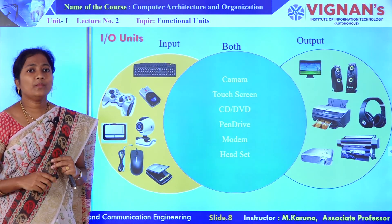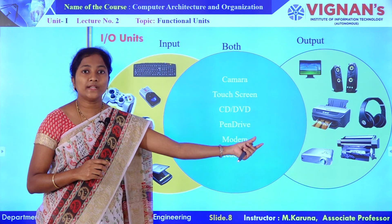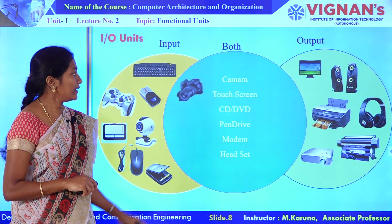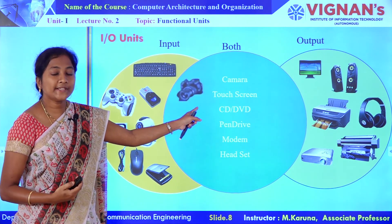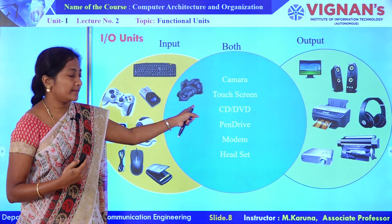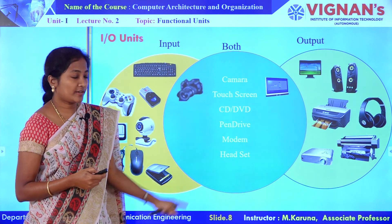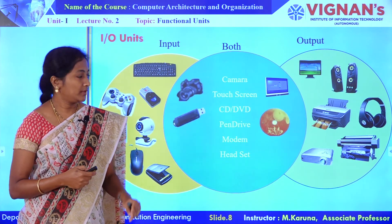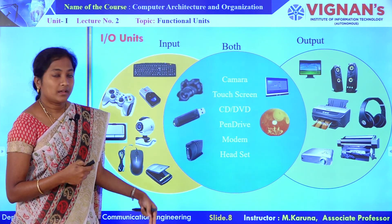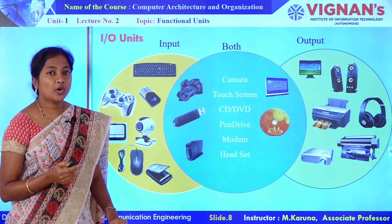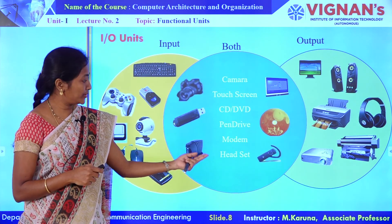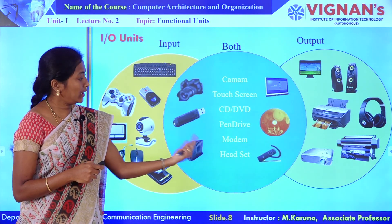Some devices apart from input and output devices can be used for both input as well as output purposes. A camera can capture an image or video and also display that image or video on the screen. Touch screen likewise. Pen drive and CDs are used for both reading and writing the data. Modem is used to convert analog to digital or digital to analog data. And also a headset can be used to record or deliver the data.